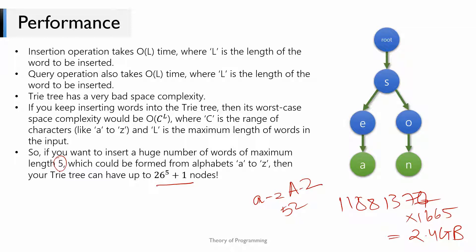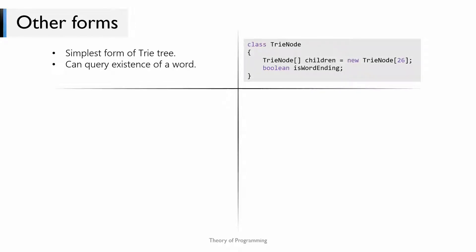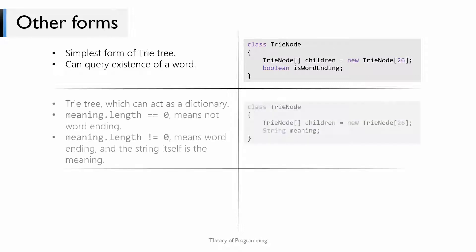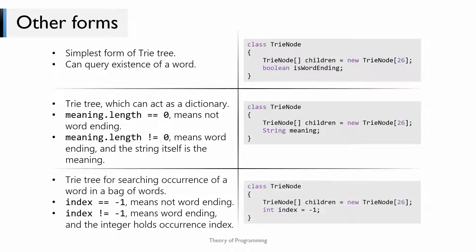A Trie tree can be modified to solve many problems. In its simplest form it queries the existence of a word. If you use a string instead of the boolean variable, the Trie tree can act as a dictionary where the string stores the meaning of the word. If you use an integer instead, you can store the index of the queried word in the original input bag of words — a value of minus one could indicate a non-word-ending node. You can modify the Trie tree to suit your specific problem.